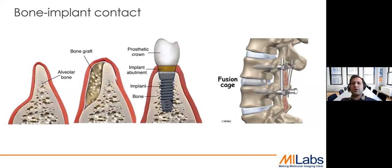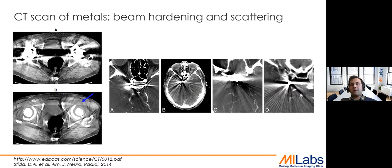There are very challenging and important applications when it comes to bone-implant contact measurements. Implants are important because when bone starts to lose its function and needs more support, surgeons place prostheses — for instance, prosthetic crowns for tooth applications — and porous scaffolds for spinal fusion. However, there is a challenge when imaging implants: CT scans of metals are often associated with massive beam hardening that prevents accurate analysis of structures around the implant. You can see streaking artifacts and a lot of scattering, making every structure around the implant very difficult to observe.